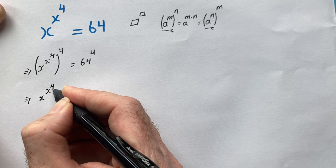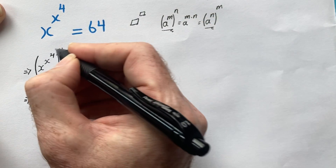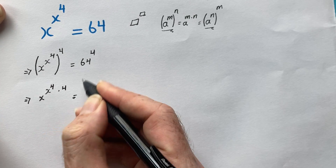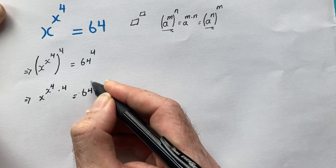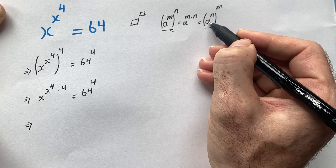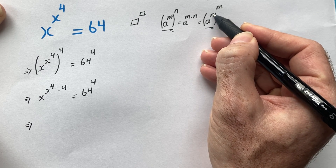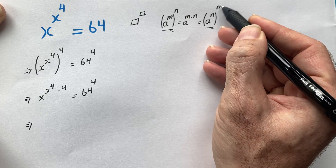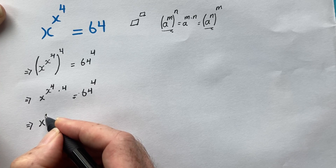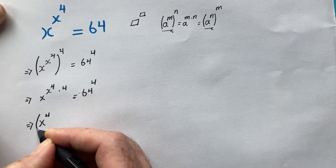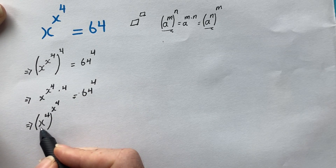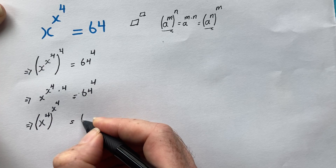Applying this rule to the left side: we have x to the power of 4 as the first exponent, multiplied by the next exponent 4. Using the rule, we can swap the exponents to get x to the power of 4, raised to the power of x to the power of 4. The right side remains 64 to the power of 4.